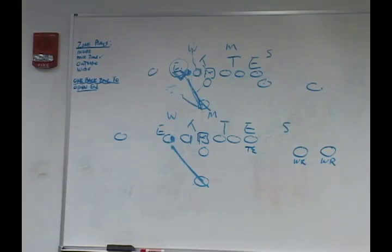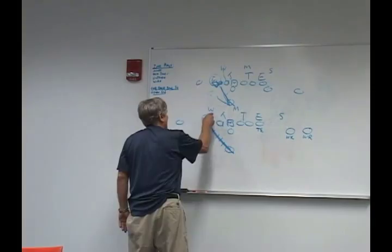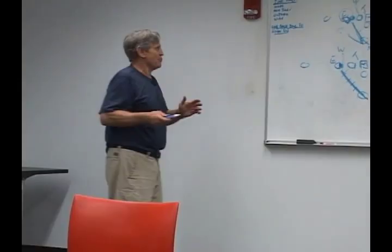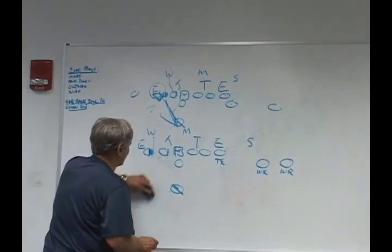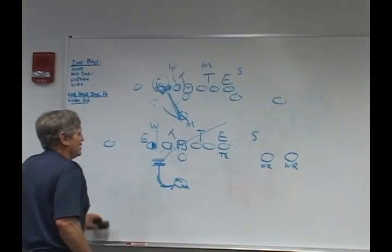In my opinion, the best way to run the mid-zone is to run it weak from a one-back set, and run it at the inside leg of the tackle with the shoulders turned. The drop step opposite buys it a little time and you can make some cuts. Now notice: I am not having the running back take a drop step, cross over, and roll — because invariably his shoulders will be turned that way and he's going to cut back.